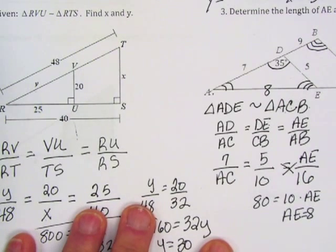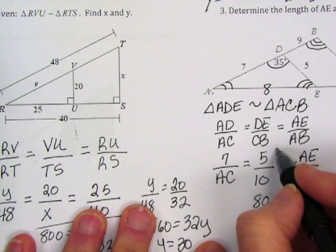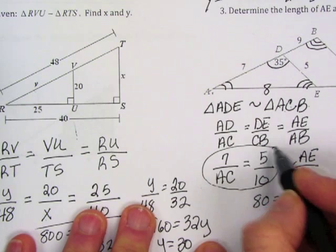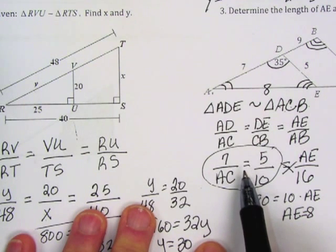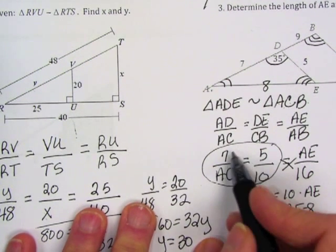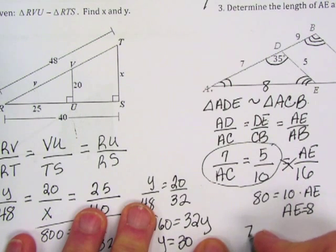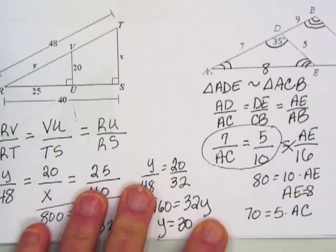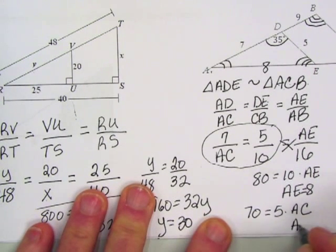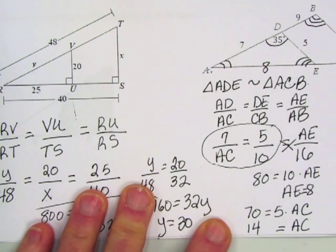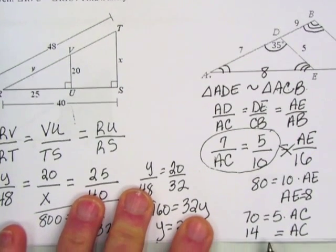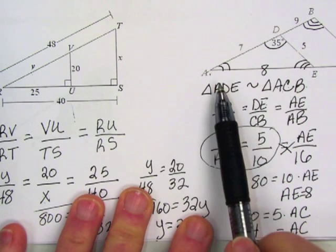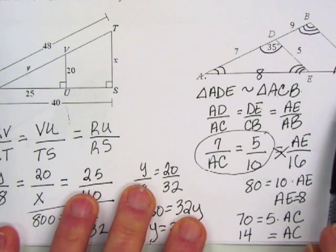Now I'm going to find AC. So I'm going to take this proportion and I'm going to use that to solve for AC. So that's going to be 7 times 10 is 70, equals 5 times AC, which means AC is 14. So AC is the length of that entire side, and it's 14.